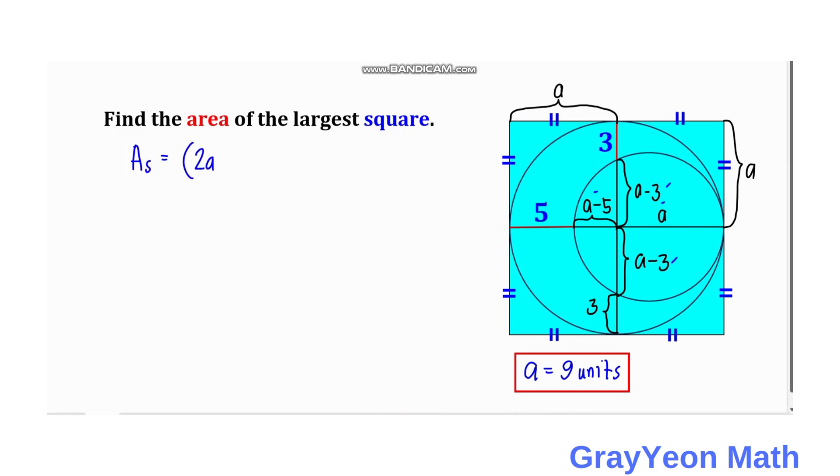The side of the square is 2a, so we have area of the square is equal to 4a squared. And since a is 9, we just need to substitute that. Then we have 4 times 9 squared is equal to...